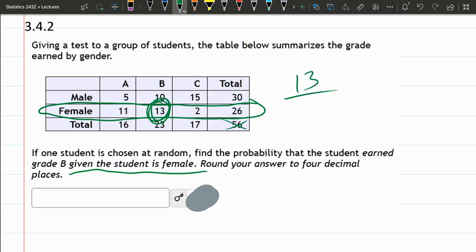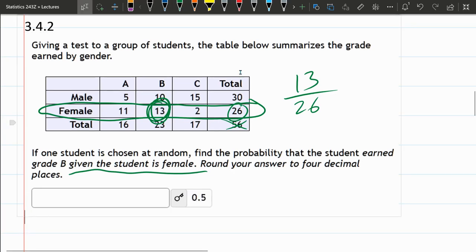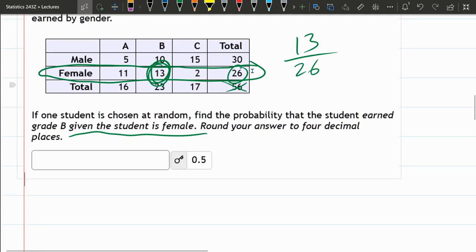Total is not 56, because that would include the male students. The total students here are 26, so this is just 13 out of 26. And that does reduce to one half, or 0.5 as a decimal.